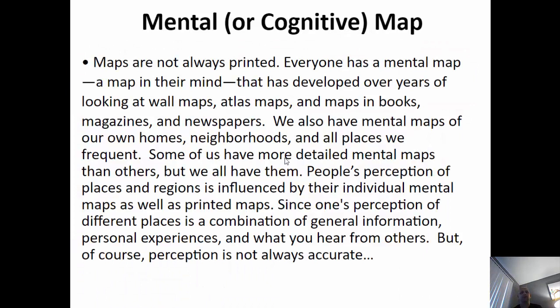Finally, mental or cognitive maps. Mental maps are not always printed — everybody has a mental map in their mind that they've developed over years of looking at wall maps, atlases, books, magazines, and newspapers. You also have mental maps of your own home — if you closed your eyes right now, you could navigate around your home because you already have the layout, the geography of it in your mind. We have mental maps for our homes, neighborhoods, any place we go to regularly. People's perceptions of a place or a region are totally influenced by your mental map, by your own perception and beliefs, not just the physical map you're looking at.